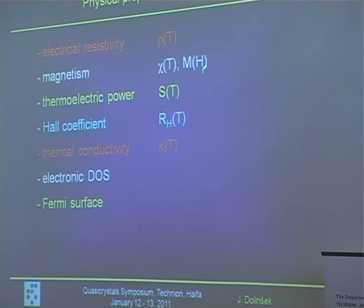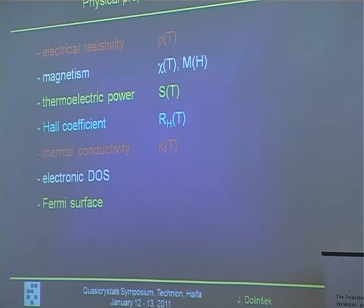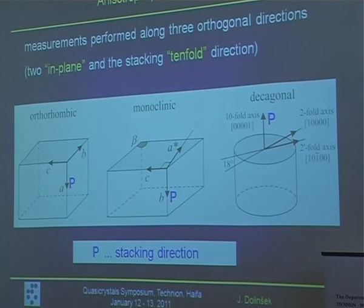The physical properties investigated were: electrical resistivity, magnetic susceptibility, magnetization as a function of field, thermoelectric power, Hall coefficient, and thermal conductivity. In some cases we were able to calculate the electronic density of states and the Fermi surface, which was essential for ab initio calculations of these physical parameters.